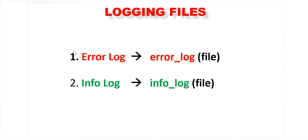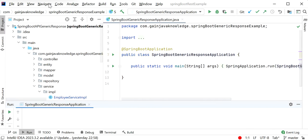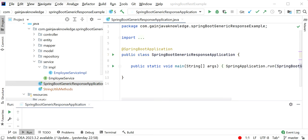If you want to find an error log, just open the error log file and search inside it only. If you want to look for info logs, open the info log file only — no need to go to both files. Let's start: first we will go through the normal implementation, and after that we will go through the different files approach.